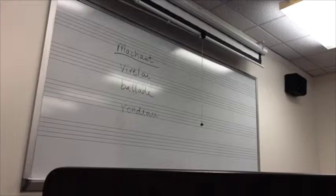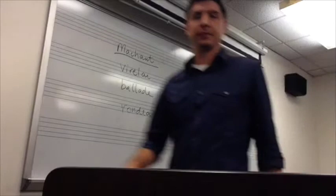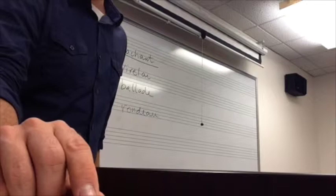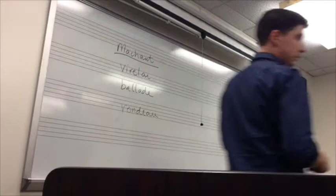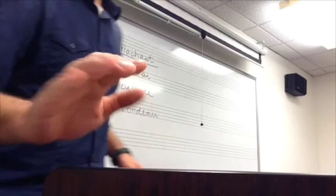The virelai is number 26 in your book — you have three virelais here. Let's listen: 'Douce dame jolie, pour Dieu le mans c'est mieux...' and then it goes back. What we have are basically two different melodies — an A melody and a B melody, a first melody and a second melody.